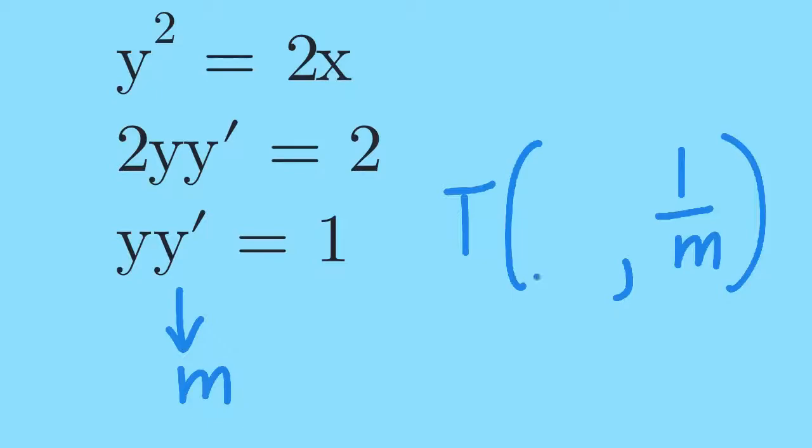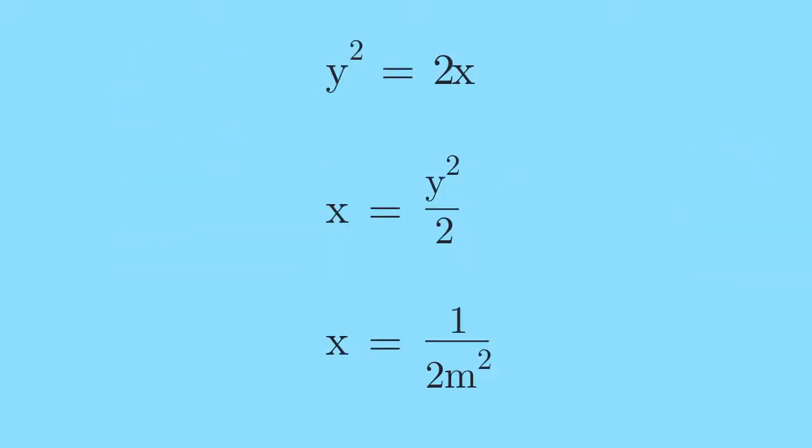In the next slide, we will look for the x coordinate of the point of tangency. To find the x coordinate of the point of tangency, we look back to the given equation and solve for x by replacing y as 1 over m. It is because the point is located on the parabola where the tangent line and the parabola meet.